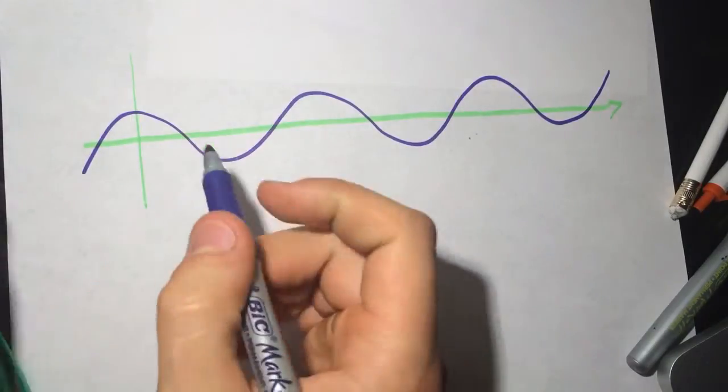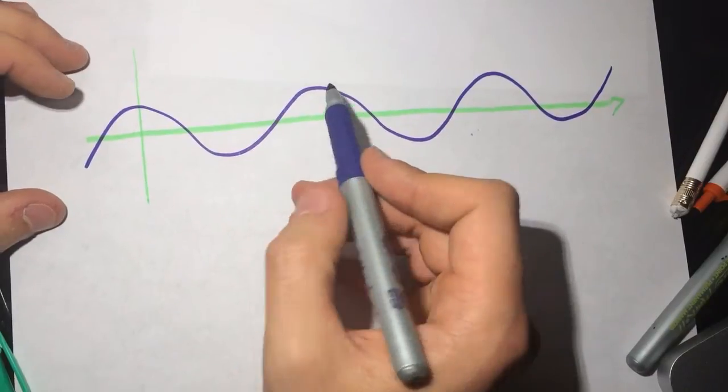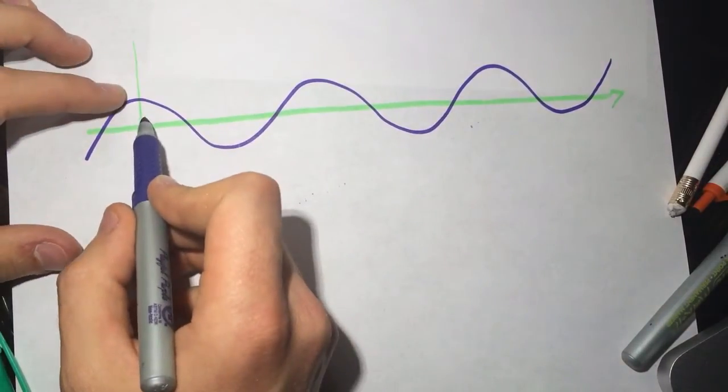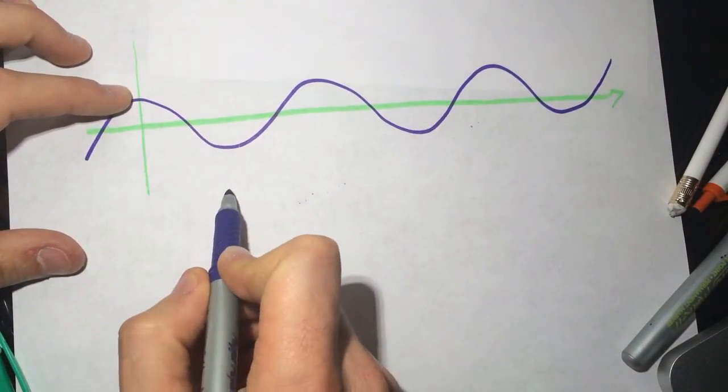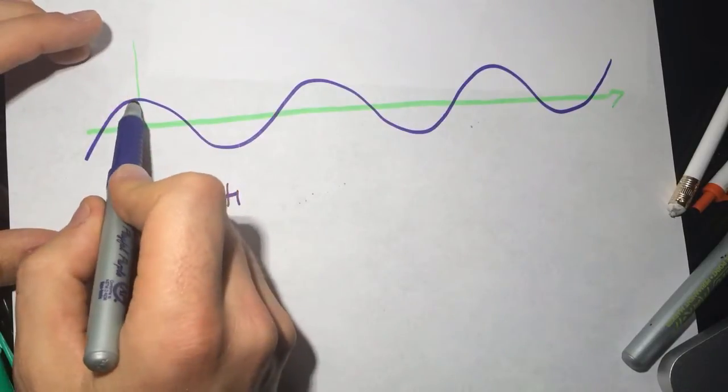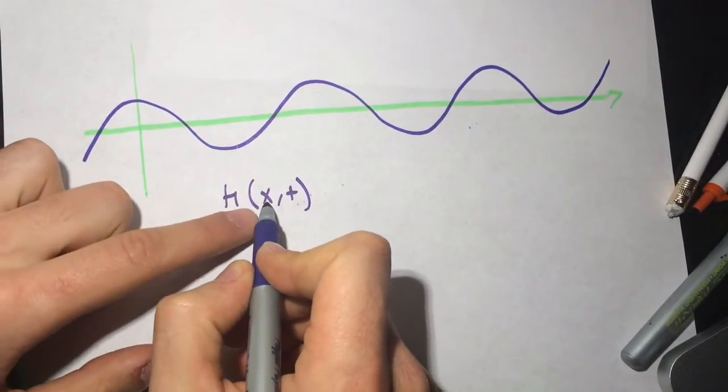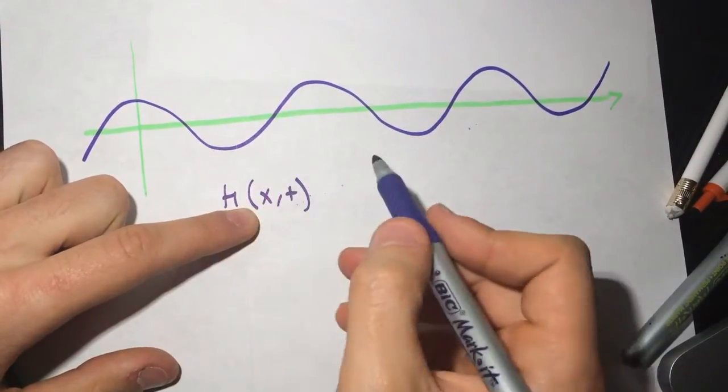So the formula for this guy, it will be the height. We'll call this height at some point, which is x and t, because it depends on x, the distance, and depends on the time.